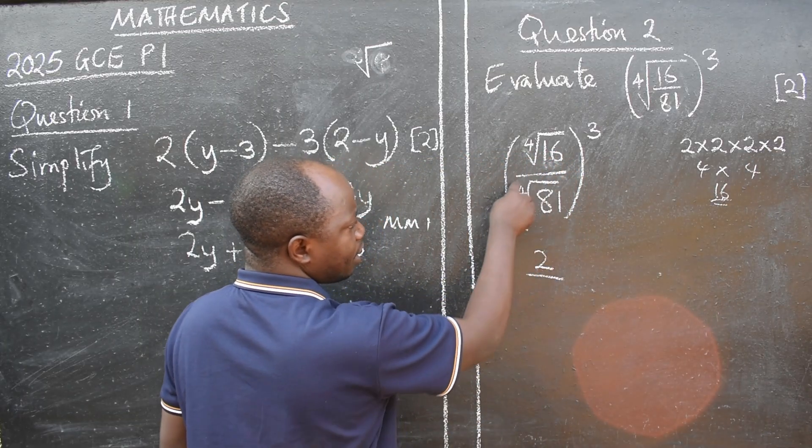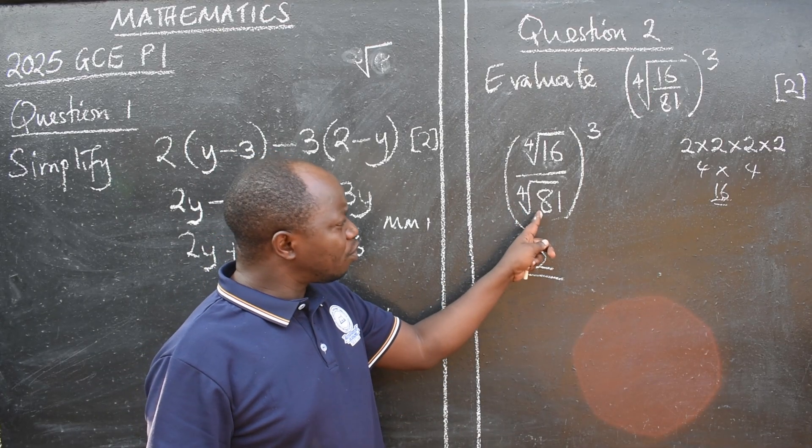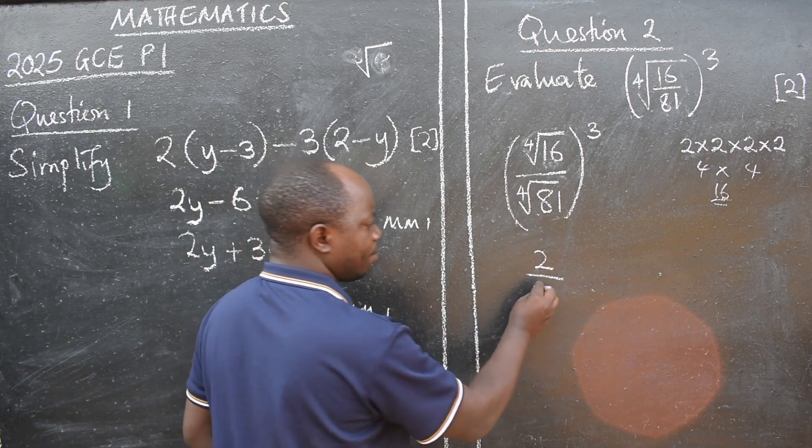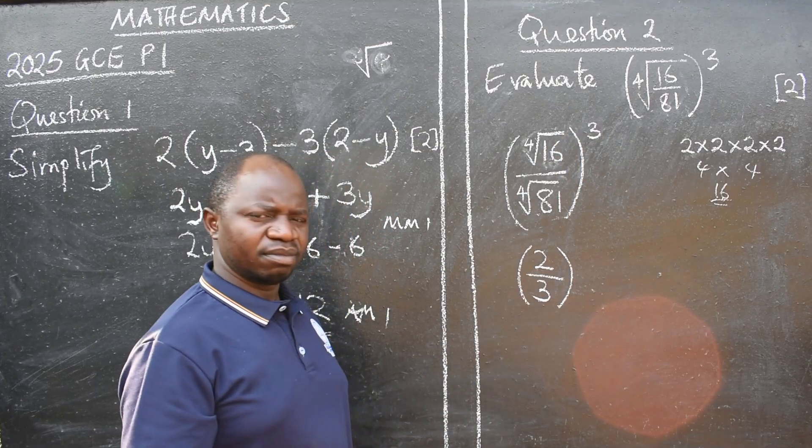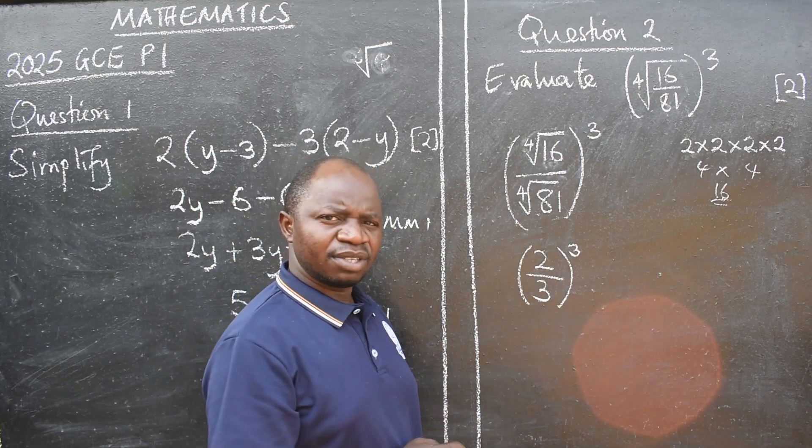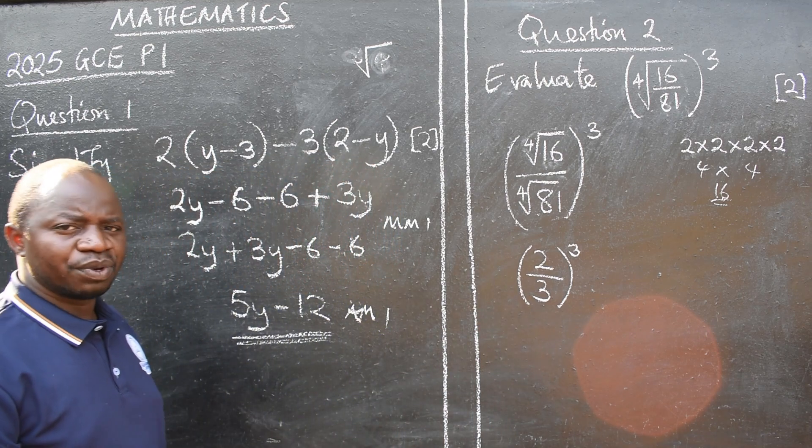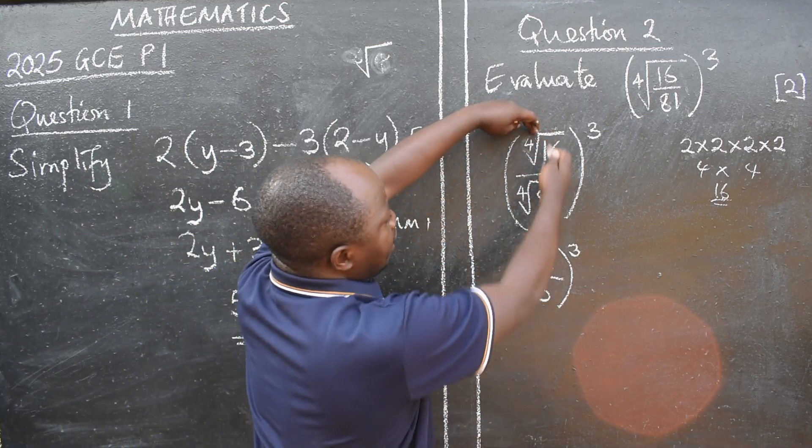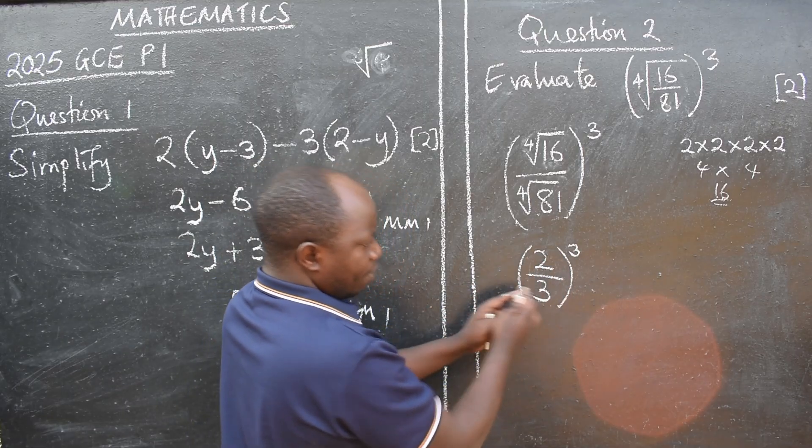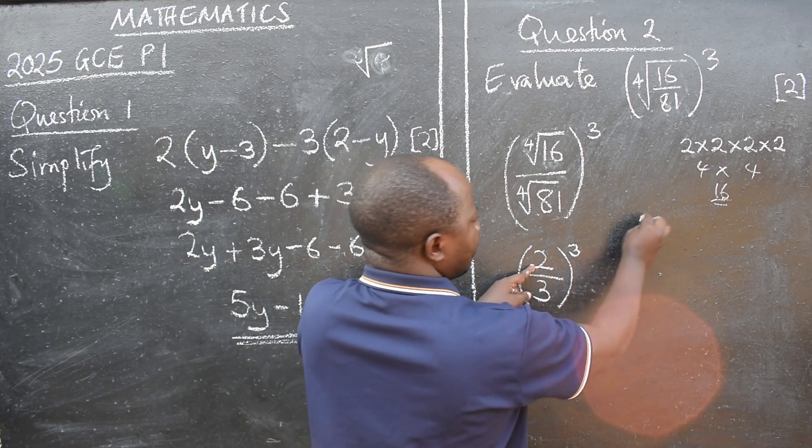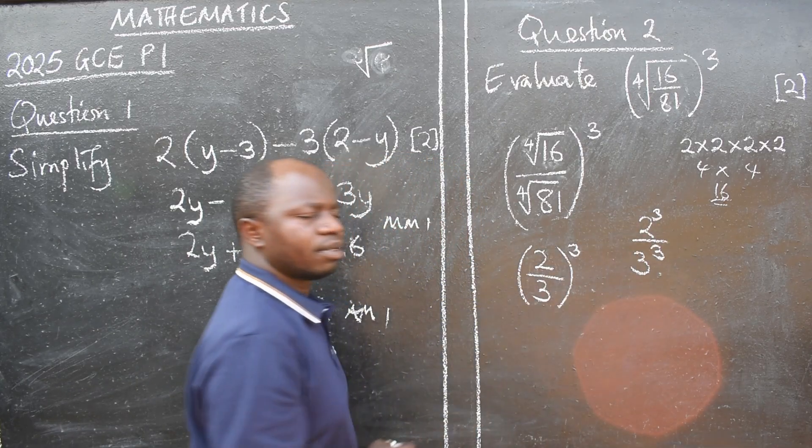Over. You do the same here. Look for a number. Find the number you can multiply itself 4 times and it should give you 81. That number is 3. Remember, outside there is a 3 there. I see this. So at this stage, what are we going to do next? Like we did here. We separated. Even here we are going to separate. Because we have a fraction inside. So we have 2 to the power 3 over 3 to the power 3. Like that.